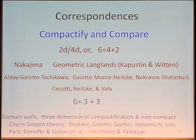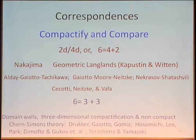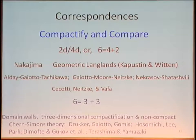You can also write 6 = 3+3, and that gets you into the world of duality domain walls, and they lead to three-dimensional compactifications of these theories, which are then related to three-dimensional non-compact Chern-Simons theories. This is a subject which is picking up steam and becoming quite hot right at this moment.